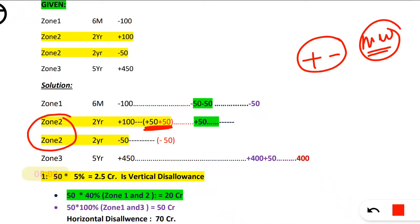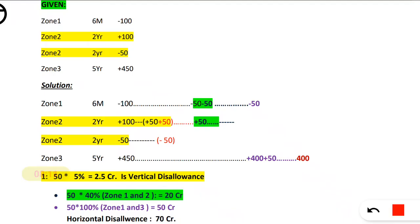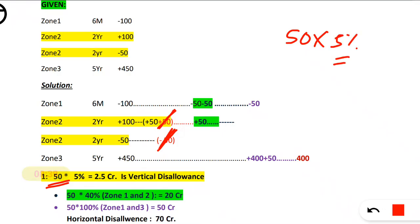So for the plus 100, I write plus 50 and plus 50. For the minus 50 — that is short position — it is minus 50. Now this plus 50 and this minus 50 get cancelled. I take only 50. This is within the zone, so I have to take 5%. It will be 50 into 5% = 2.5 CR. And this is nothing but your vertical disallowance, because within the zone you have adjusted.